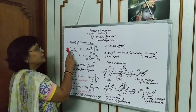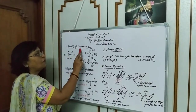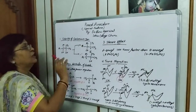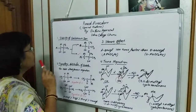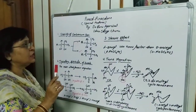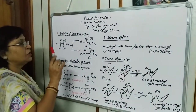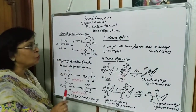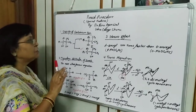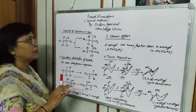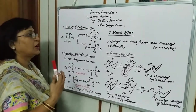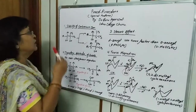The first special feature is stability of the carbonium ion. In this, if there are possibilities of formation of 2 carbonium ions, then whichever is more stable, that carbonium ion will be formed.